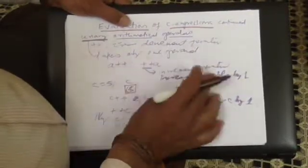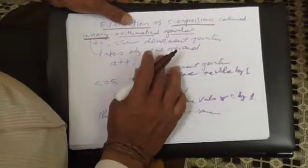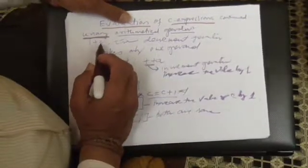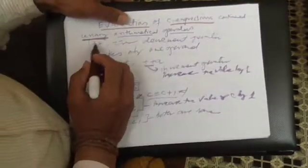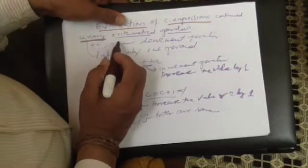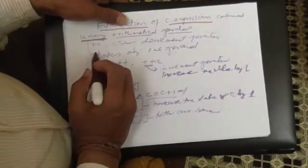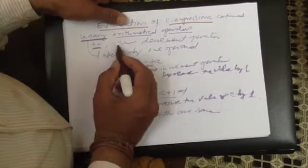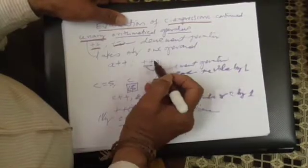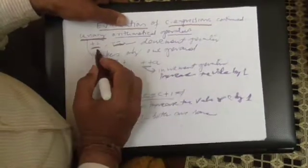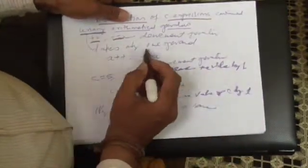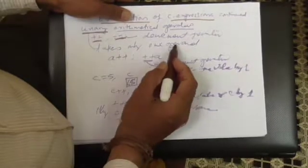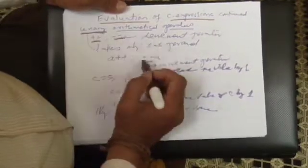The unary arithmetical operators — there are basically two types here: '++' called the increment operator, and '--' called the decrement operator. It increments a variable by only one. And it takes only one operand, therefore they are called unary operators.